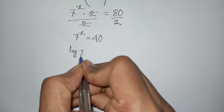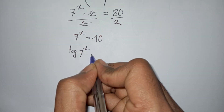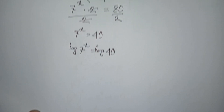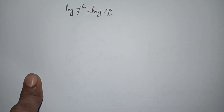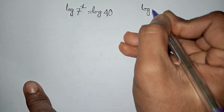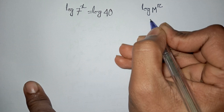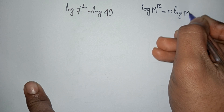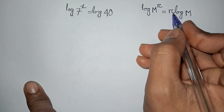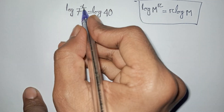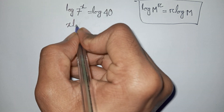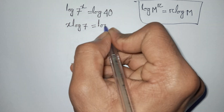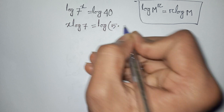Now we apply log on both sides. So, log of 7 power x is equal to log of 40. This power x will move to the front using the log power rule. So, log of 40 can be written as log of 5 times 8.